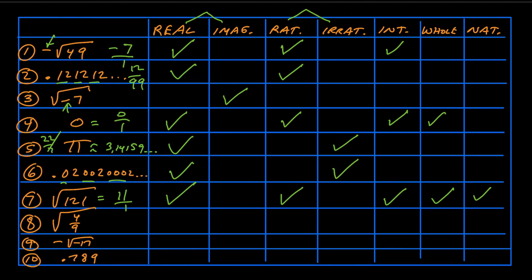For number eight, the square root of 4/9 — we can simplify this. The square root of 4 is 2, the square root of 9 is 3, so you simplify the numerator and denominator separately, giving you 2/3. We can see that 2 is an integer and 3 is an integer — that's a ratio of two integers, making it a rational number, not irrational. It's not the square root of a negative number, so it's a real number. But it's not an integer, not whole, and not natural. Just two categories: real and rational.